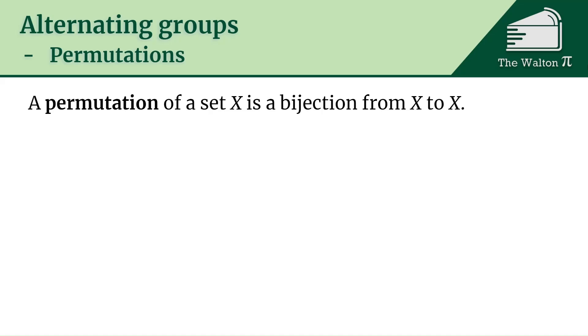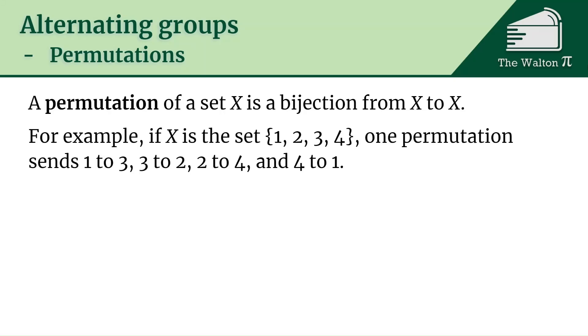A permutation of a set X is a bijection from X to X. For example, if the set X is the set containing 1, 2, 3, 4, one permutation would send 1 to 3, 3 to 2, 2 to 4, and 4 to 1. It's just how do I take all the elements and rearrange them.